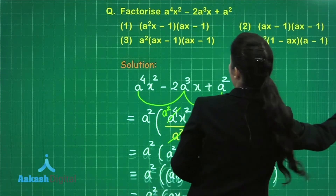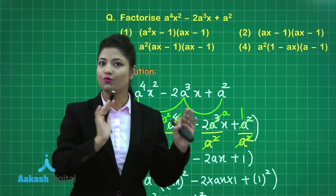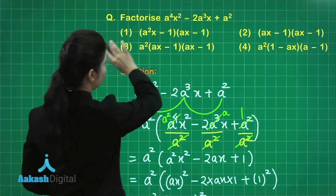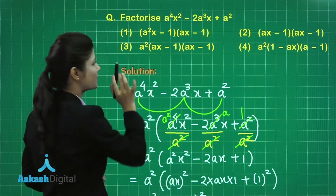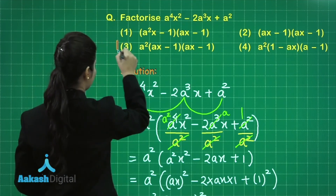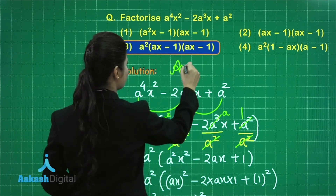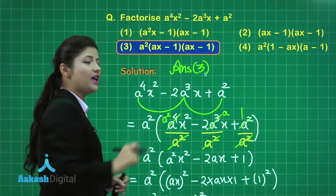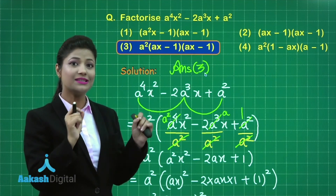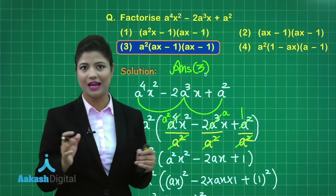Looking at the four options, the correct answer is a²(ax - 1)(ax - 1), which is clearly option number 3. In this way, we first took a² as a common factor, then further factorized using the algebraic identity (a - b)². You can factorize polynomials in the same way using the method of taking out the common factor.